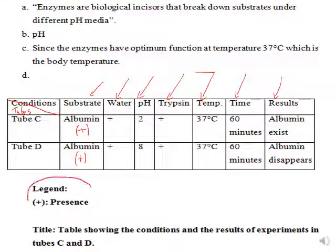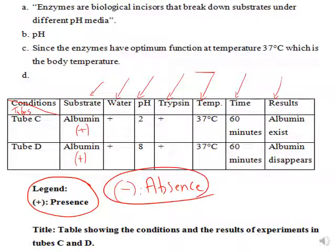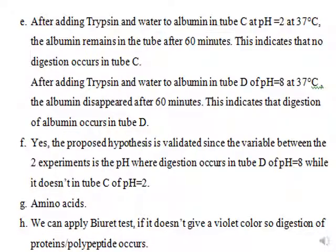You must provide a legend — the legend is very important. Plus means presence, and sometimes we use minus which means absence. You have to use plus and minus if necessary. The title should be: table showing the conditions and the results of the experiments in tubes C and D.